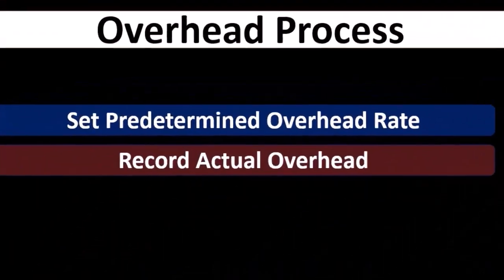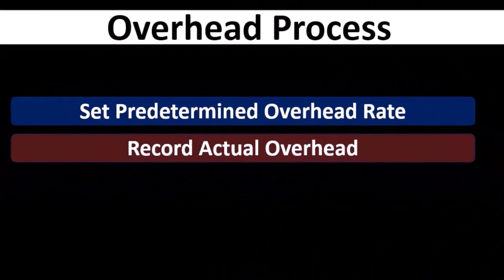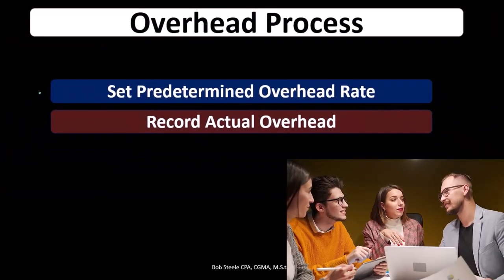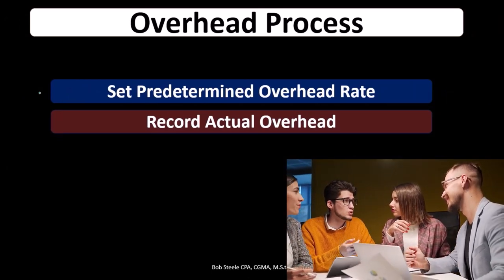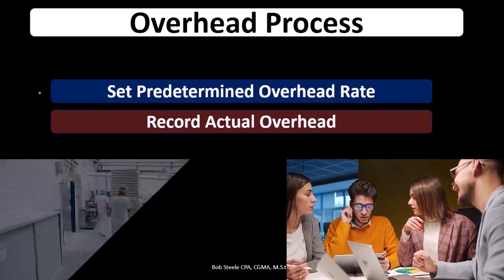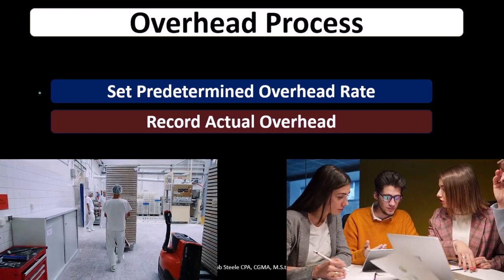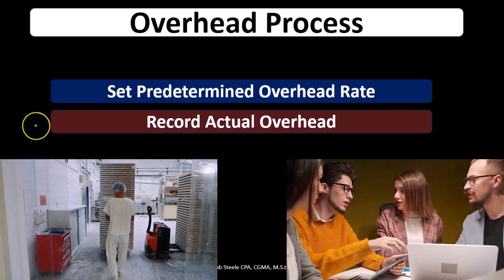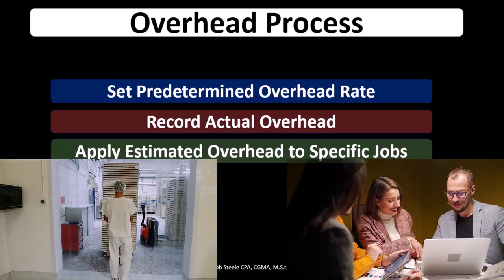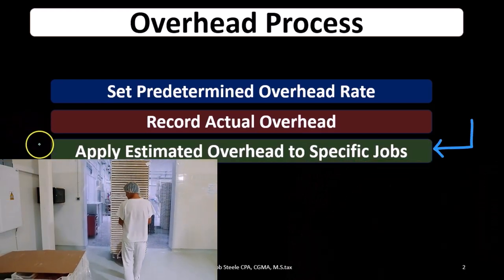We're then going to record actual overhead that we have during the process. Remember what actual overhead is — it's going to be the cost of anything that we can't apply to a job. So anything related to the manufacturing process that we cannot apply directly to a job: indirect materials, indirect labor, anything related to the warehouse that we can't apply directly — like depreciation, like utilities on the warehouse. Then we're going to put that into overhead, and then we're going to apply estimated overhead to specific jobs.